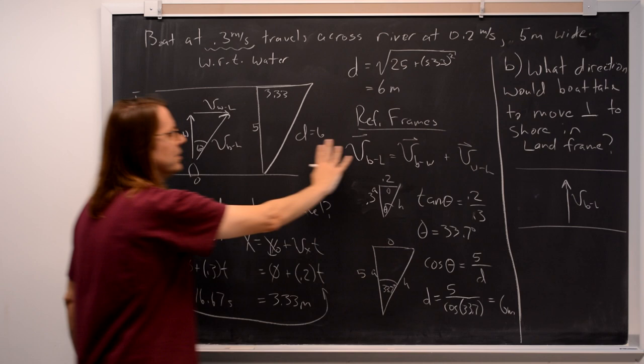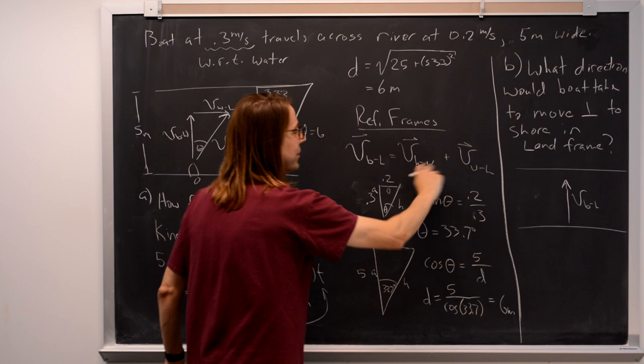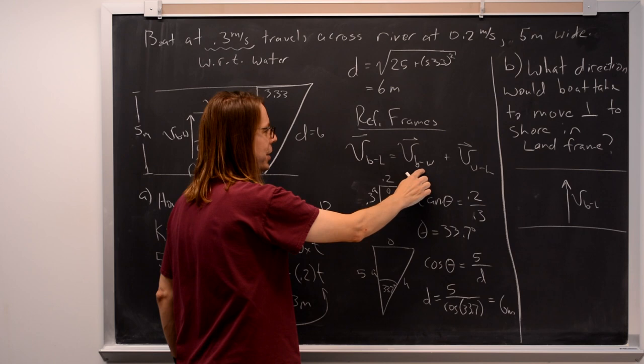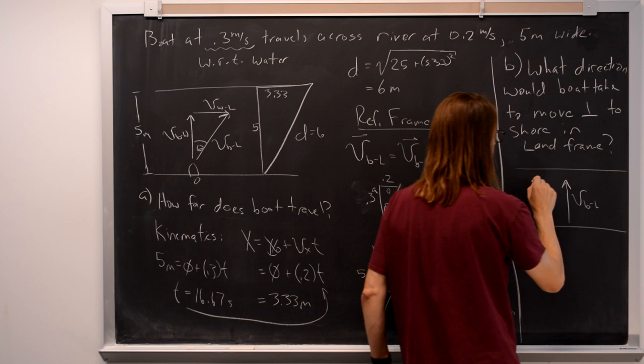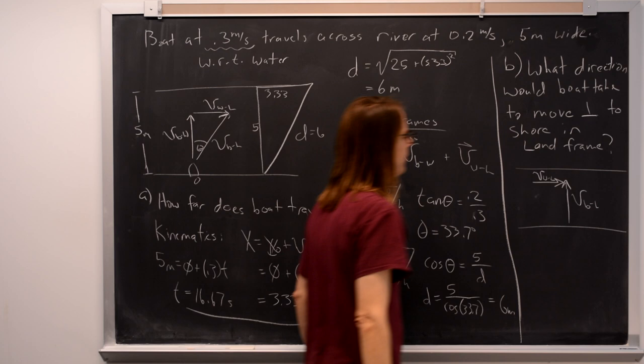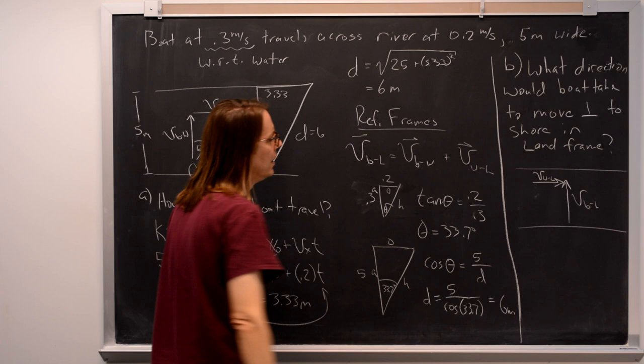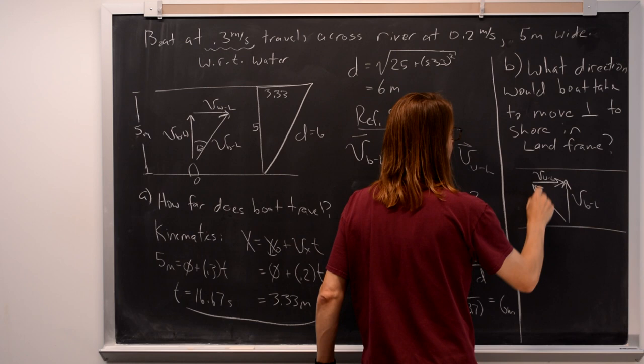We know the velocity of the boat in the land frame is the sum of these two. So we're not really allowed to change this one, the velocity of the water in the land frame. The boat can't change the direction of the water to pull this off. The boat's going to have to change its own direction. So when we think about how these add up, we're stuck with this one. So clearly the only thing that the boat could do is to turn its 0.3 meters per second that way, the velocity of the boat in the water frame.